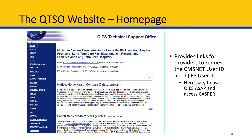Let's begin with the homepage. One of the most critical pieces of information on the QTSO homepage are the links for providers to request a CMS Net user ID and a QTS user ID. Both user IDs are needed to submit data in QTS ASAP, as well as to use the CASPER reporting application. So if you're new to the HQRP, visit the QTSO homepage to get these necessary user IDs.